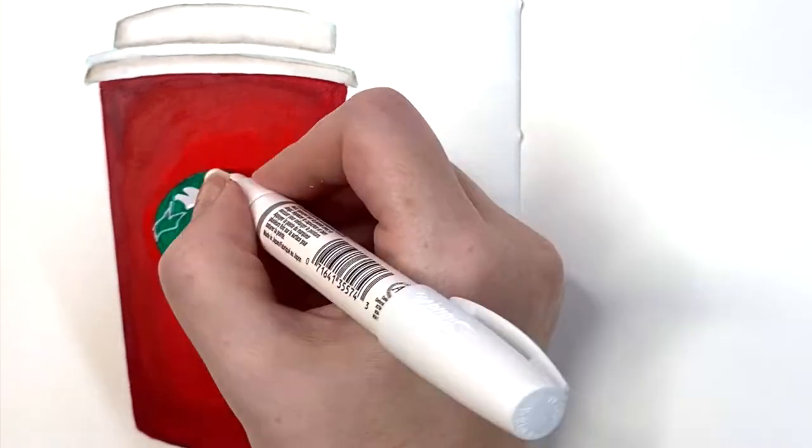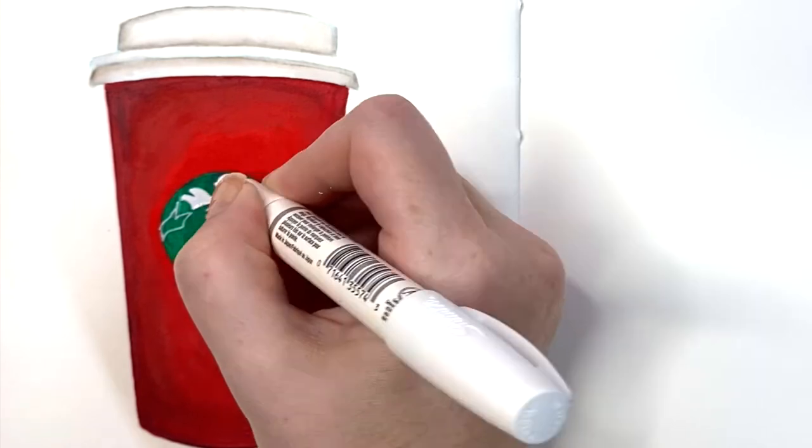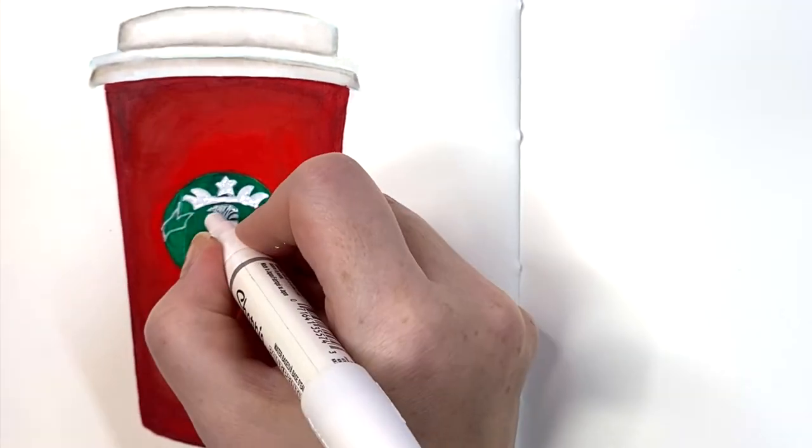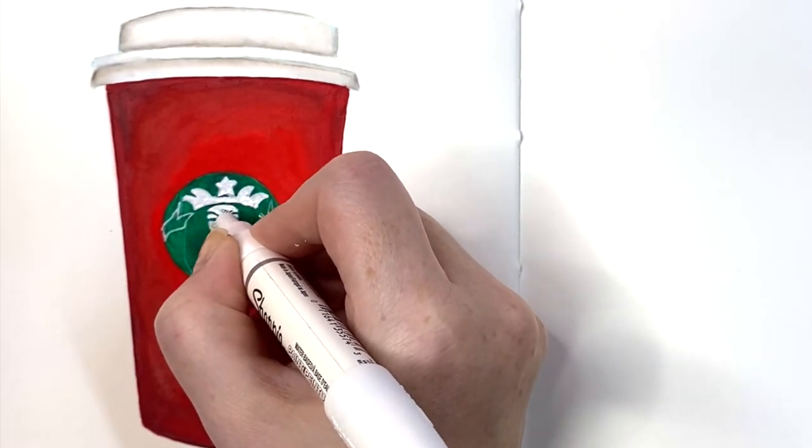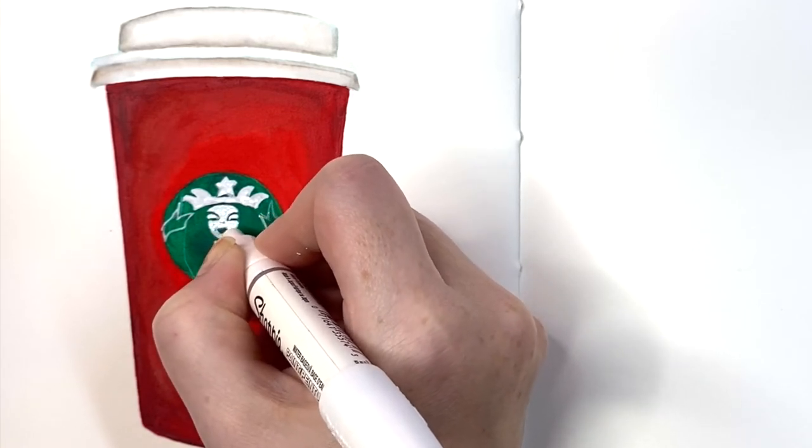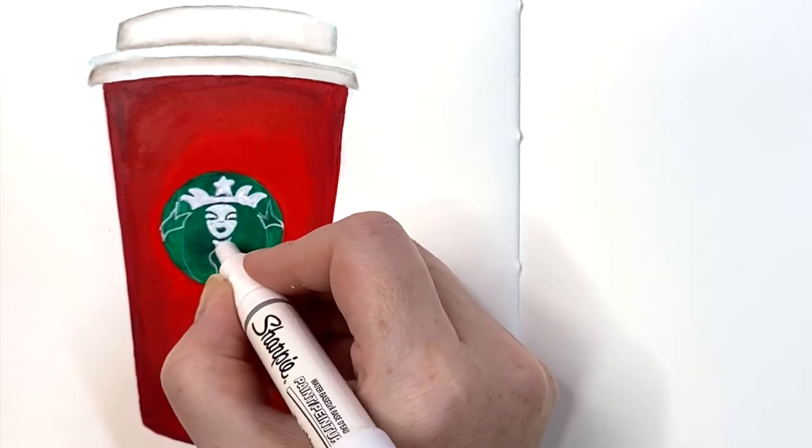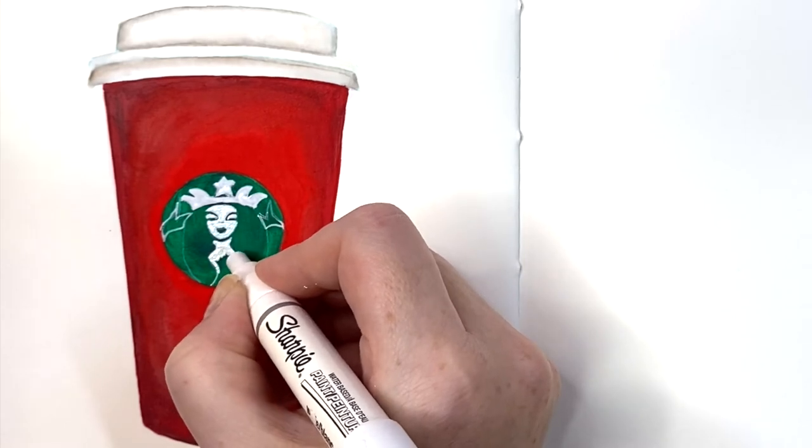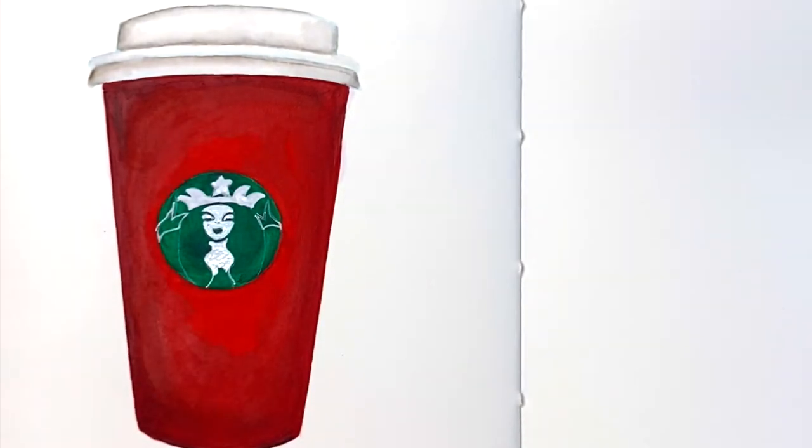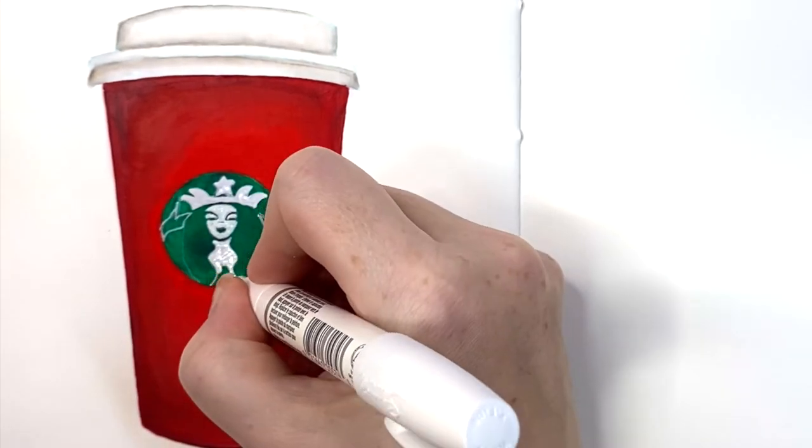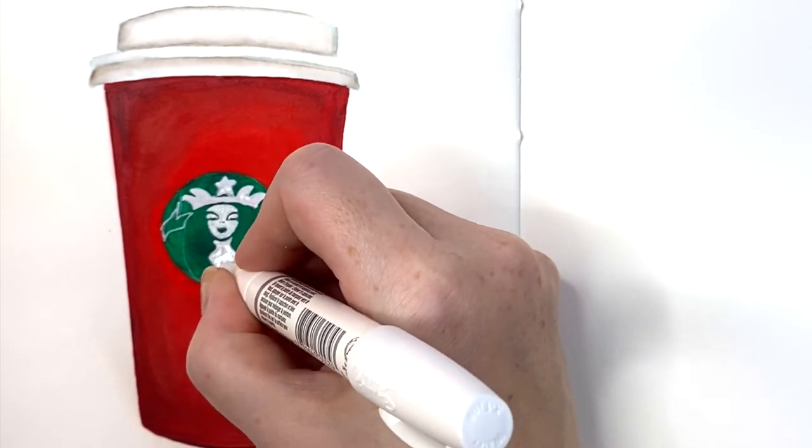If you didn't have a paint pen on hand, you could absolutely do this with a white colored pencil, with an acrylic paint and paint brush. Anything you've got on hand, I think you could make work. I luckily just grab my Sharpie, which is my go-to. It gives me a nice thick line. Posca's are really great too.